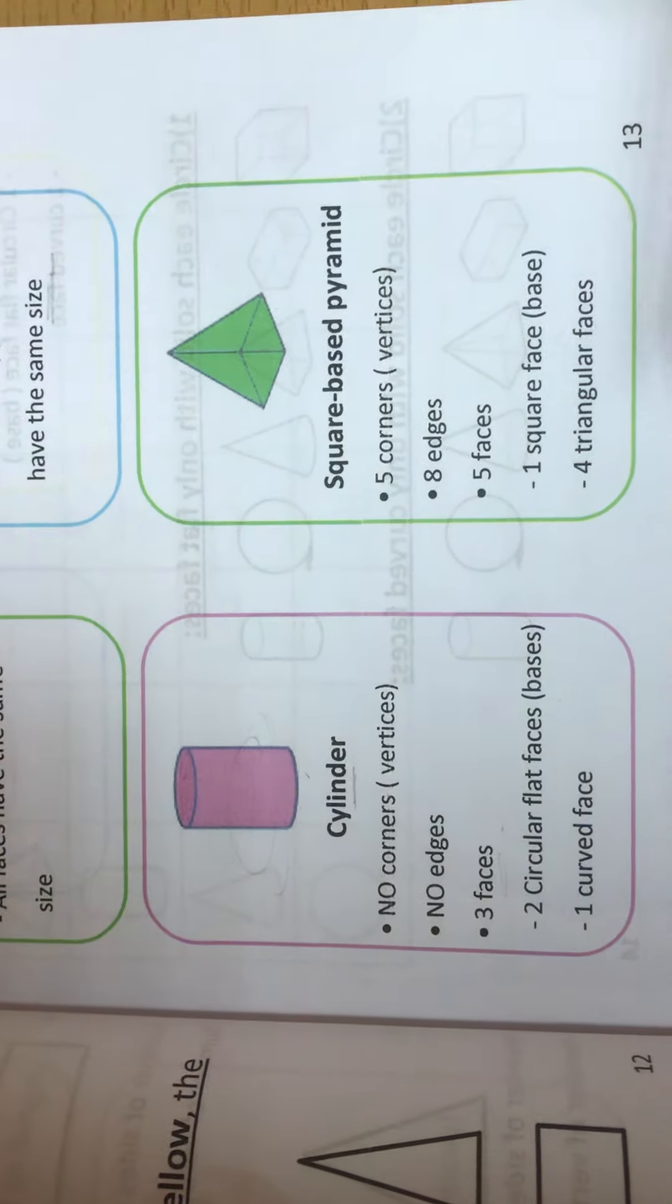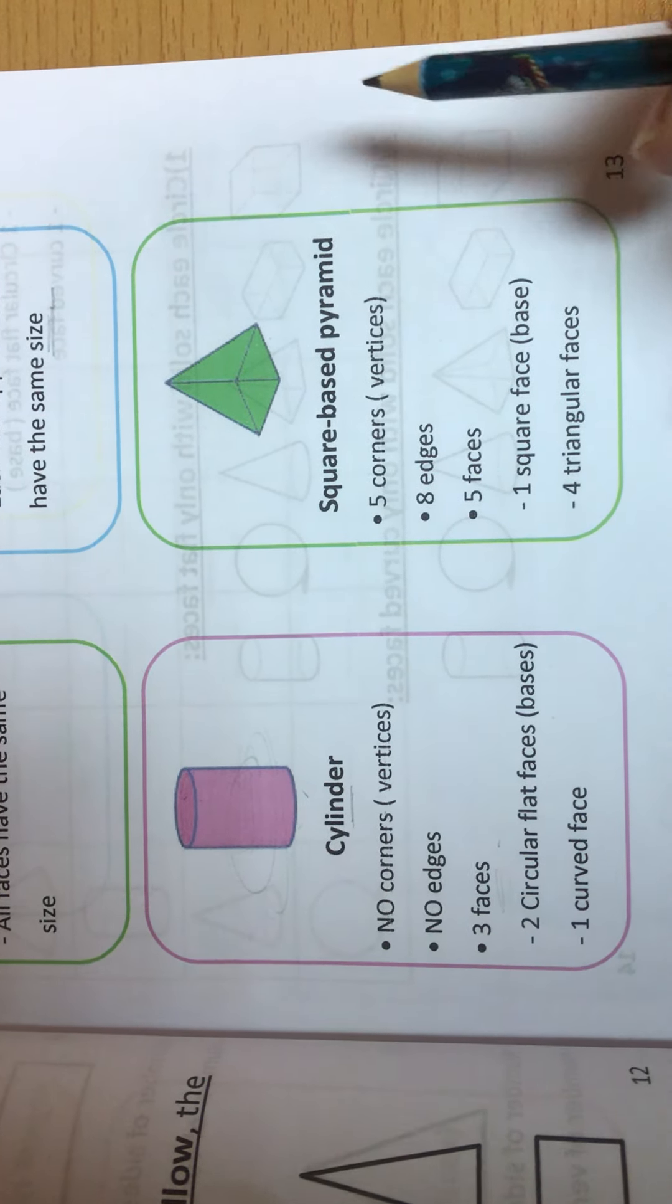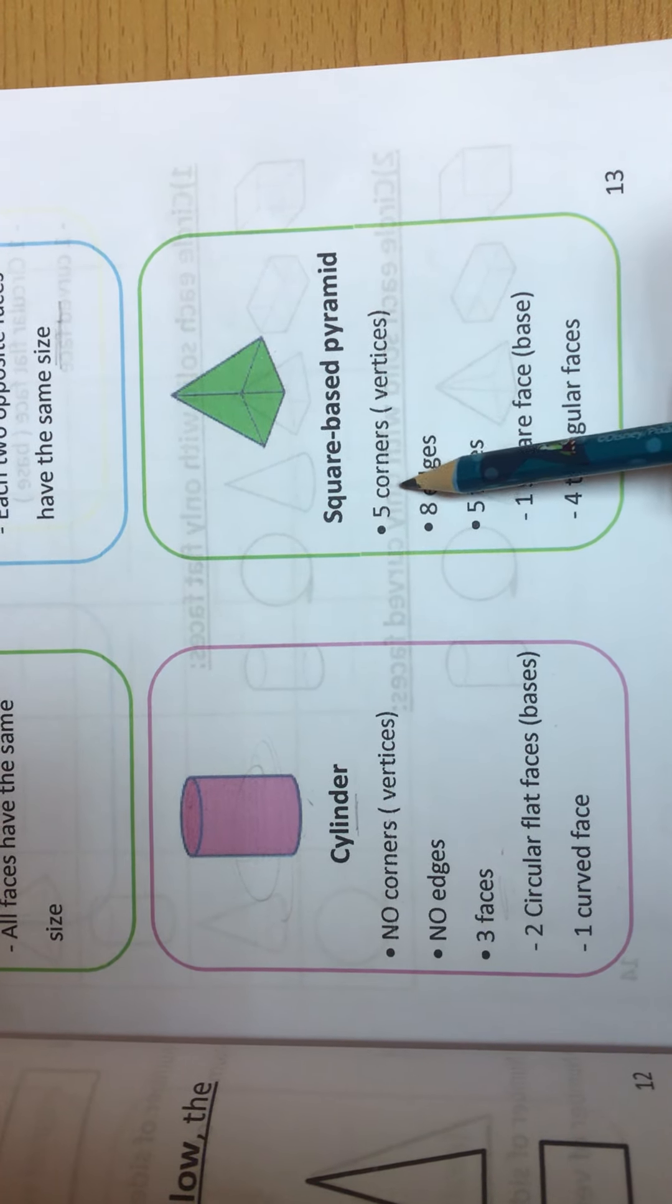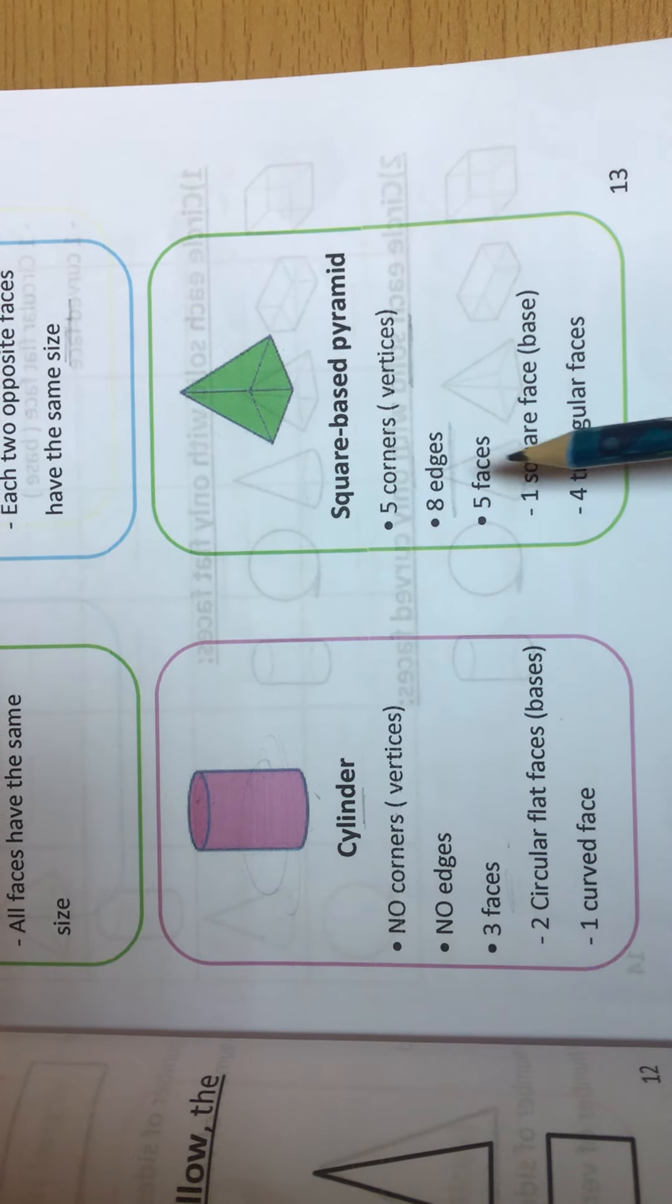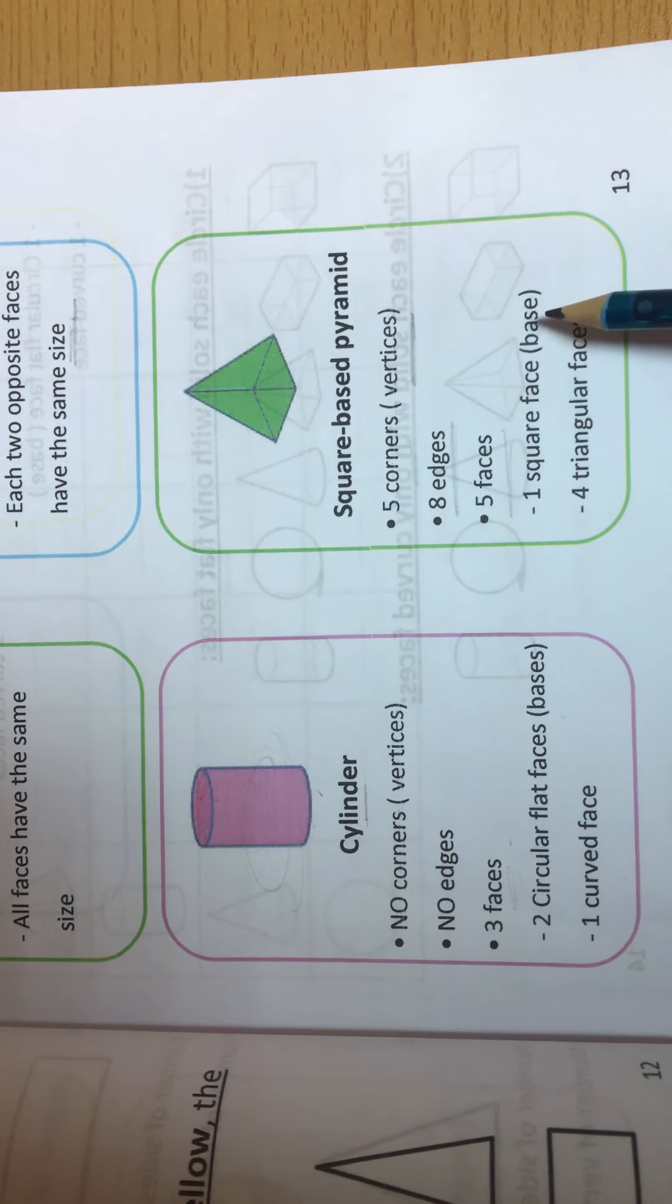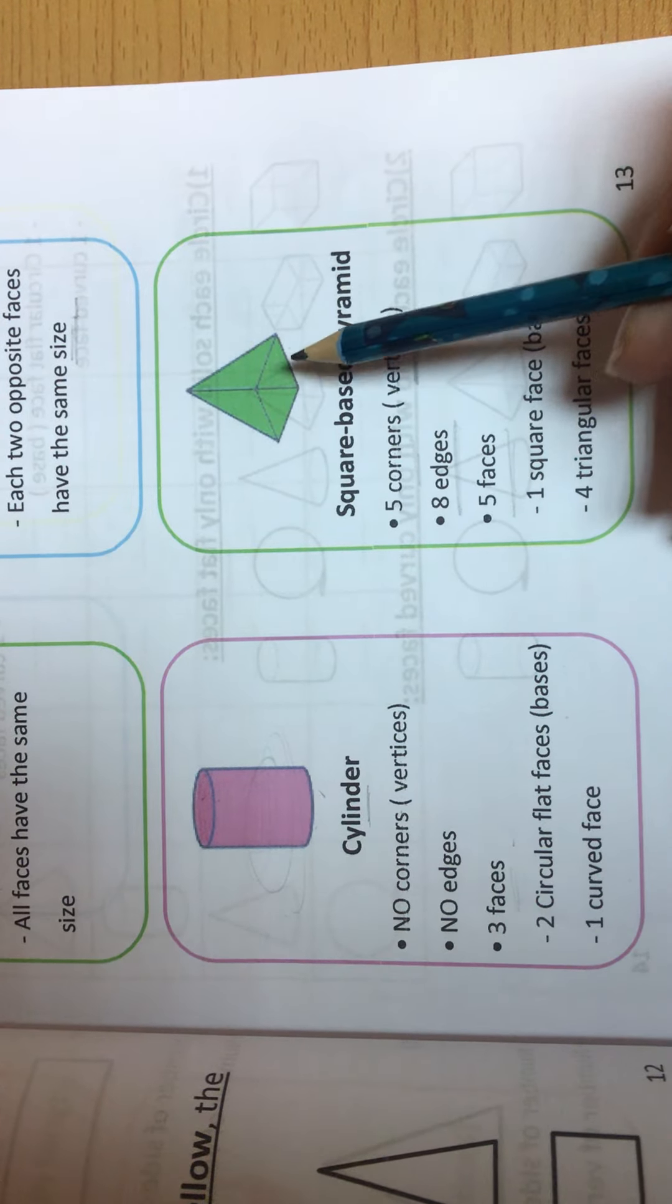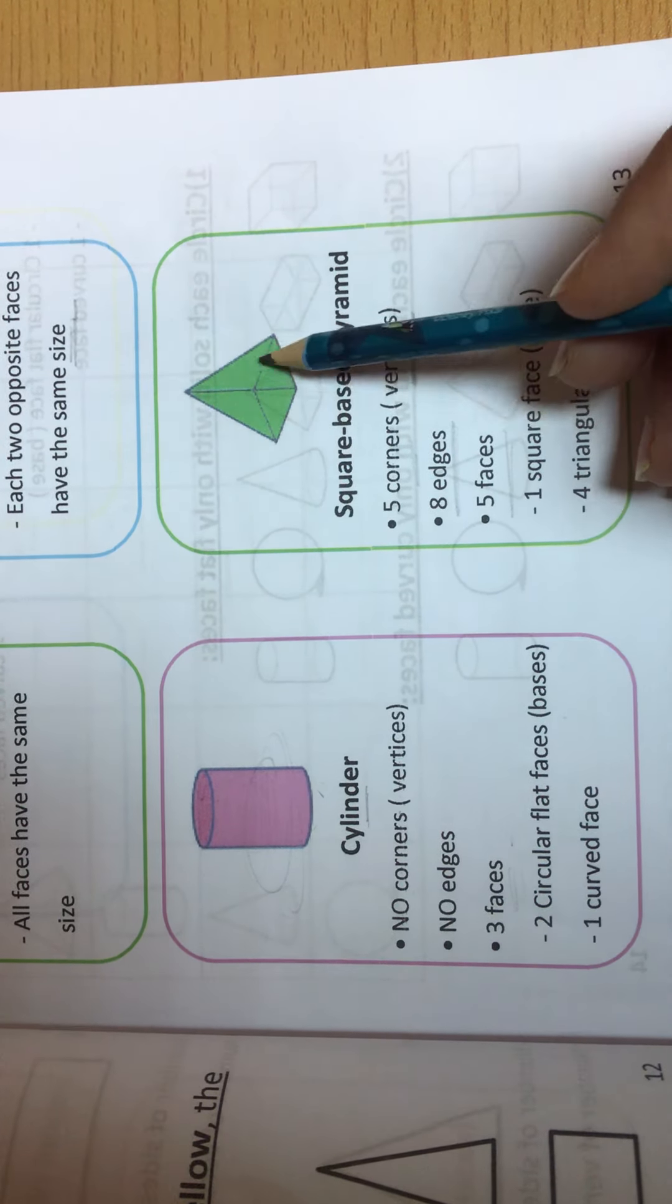The fourth one: square-based pyramid. Has 5 corners or vertices, 8 edges, 5 faces: 1 square face (base, here under) and 4 triangle faces.